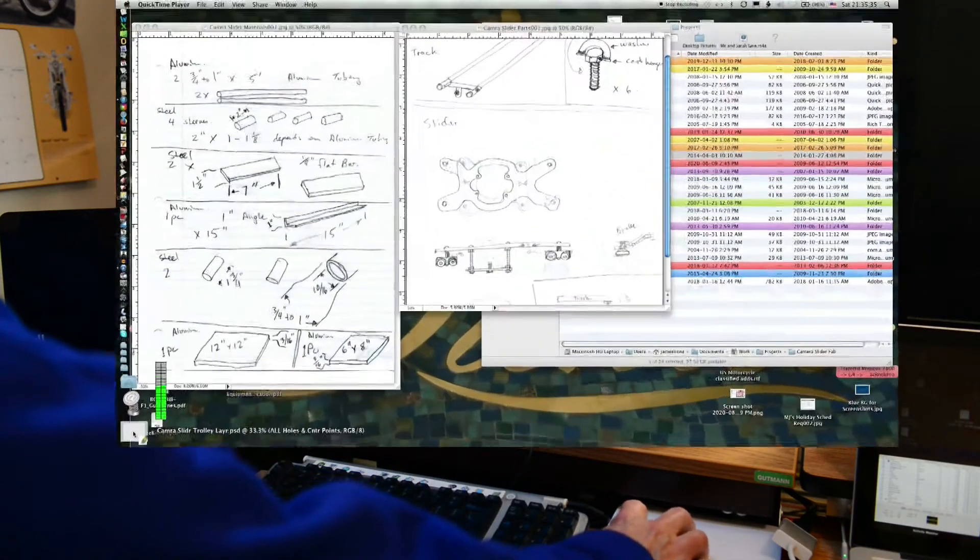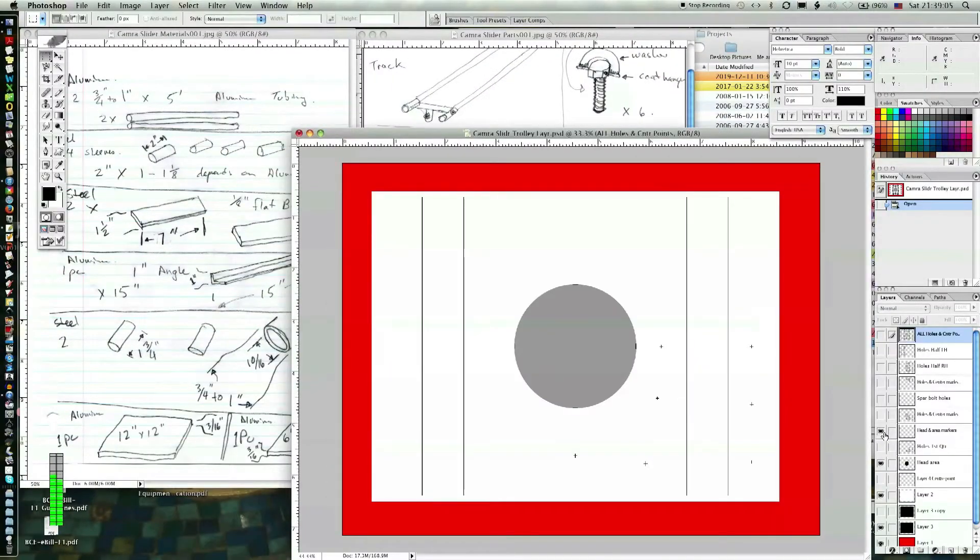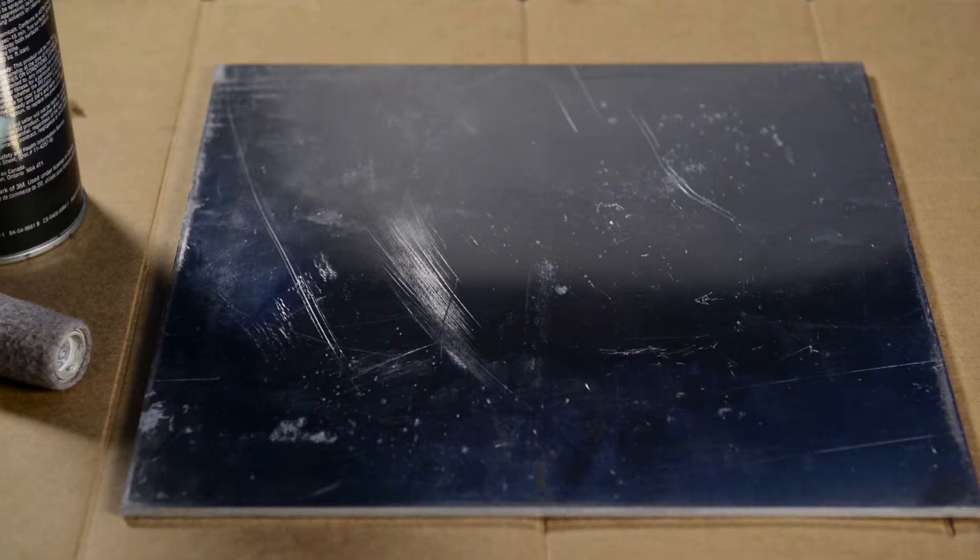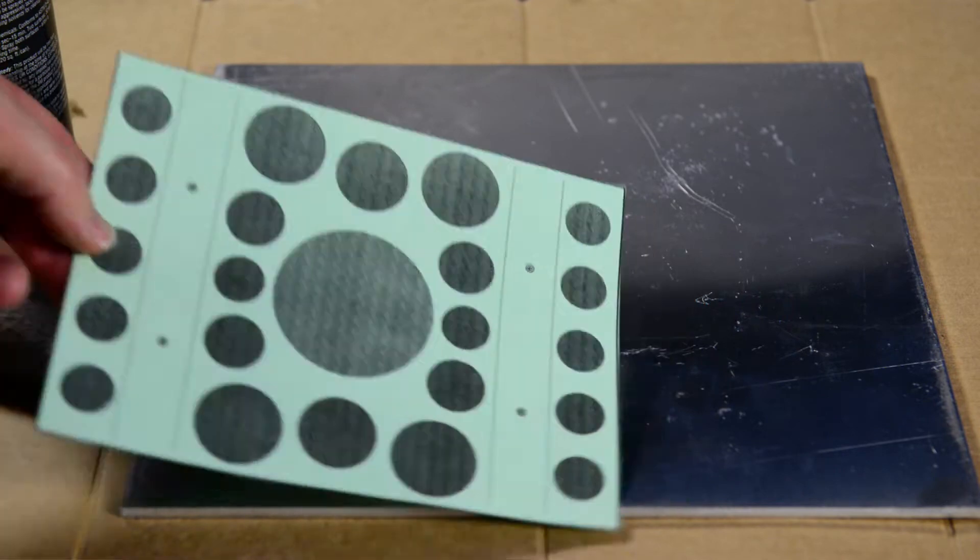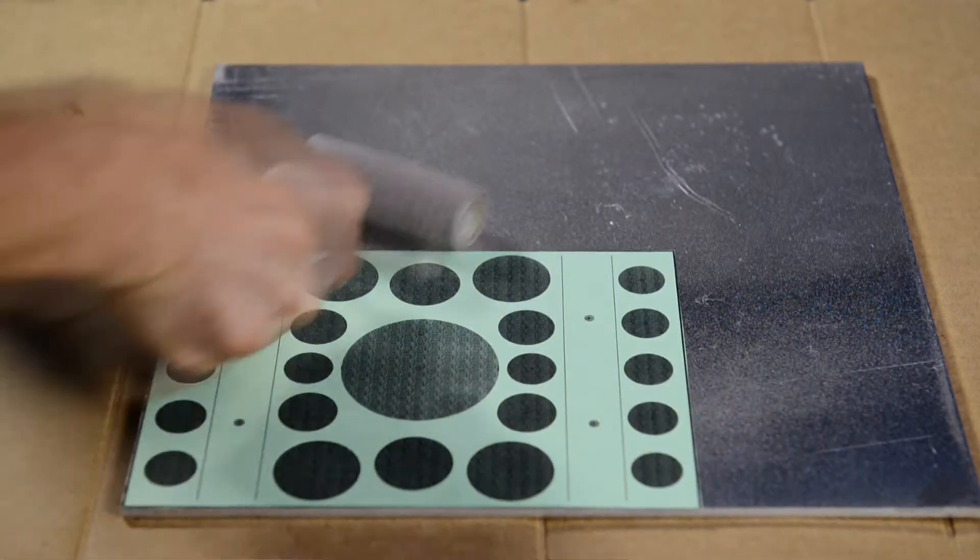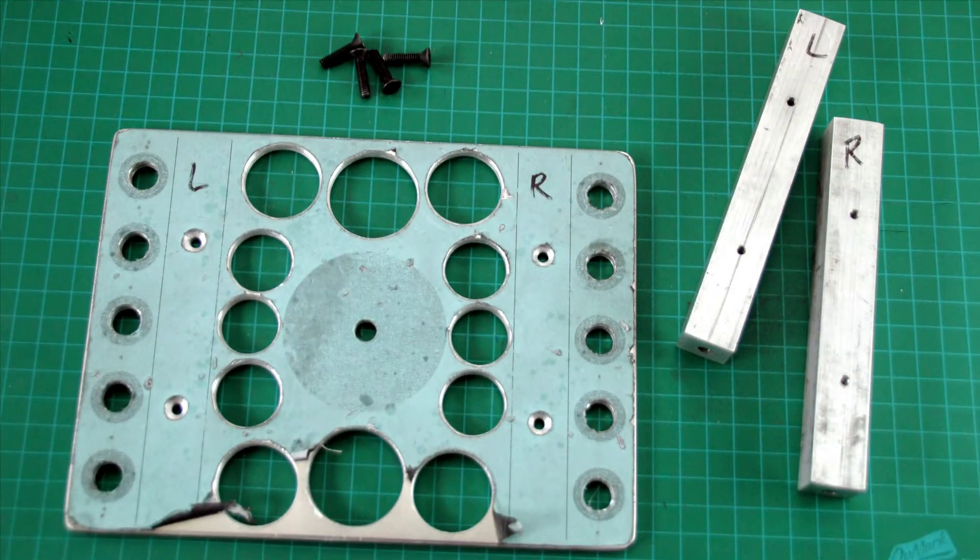I worked out the design for the slider deck in a graphics editing application. This allowed me to print out my drafted image precisely in actual size which was then affixed to the aluminum plate using spray adhesive. This gave me the guidelines for where to drill.